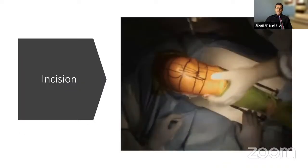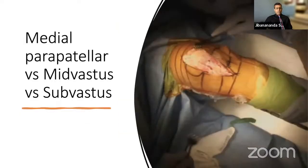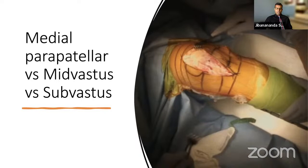My incision is standard — I use a four-finger breadth above the patella as the top of my incision and extend just past the tibial tuberosity, staying medial at the tuberosity so patients can potentially kneel. One important thing: make sure to develop full thickness flaps where the fascia layer is attached to the subcutaneous tissue. Particularly in thin fascia cases, you can get full-thickness skin necrosis if you're not careful.